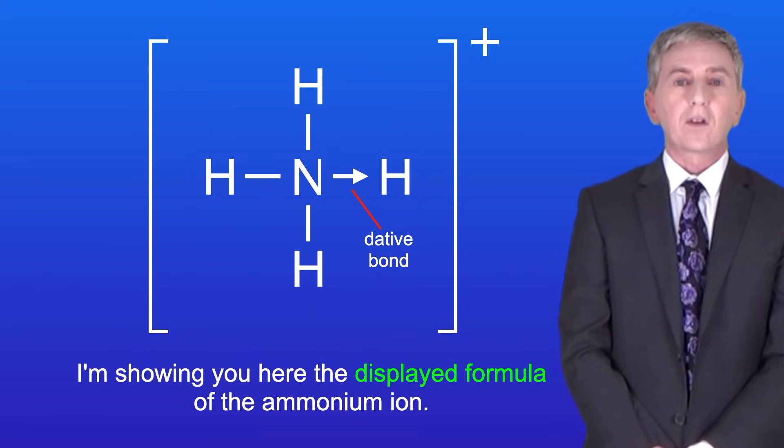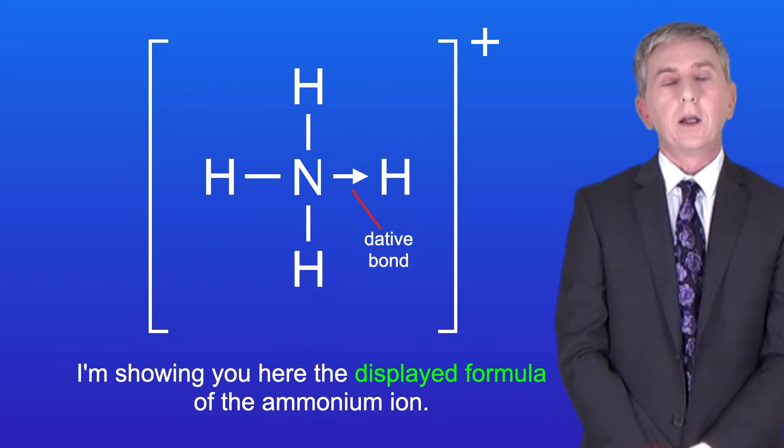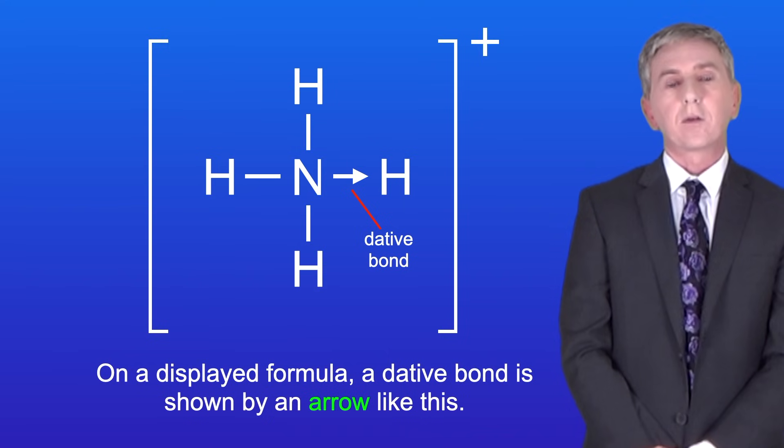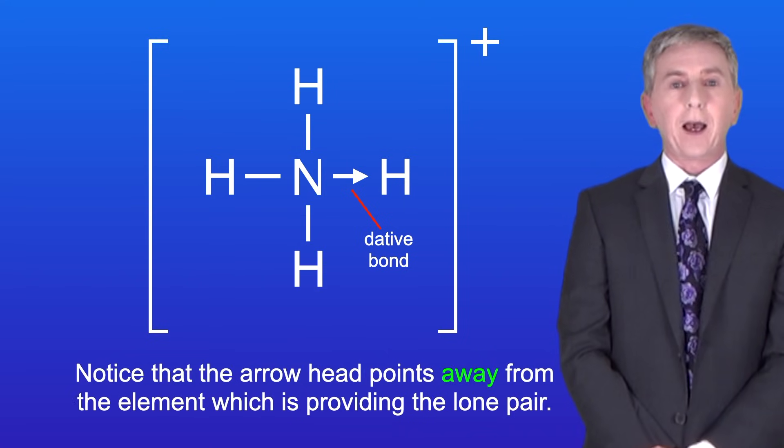I'm showing you here the displayed formula of the ammonium ion. On a displayed formula, a dative bond is shown by an arrow like this. Notice that the arrowhead points away from the element which is providing the lone pair.